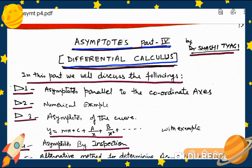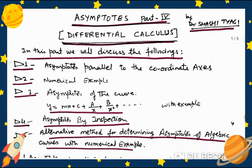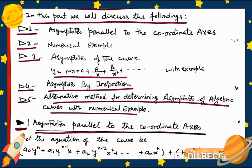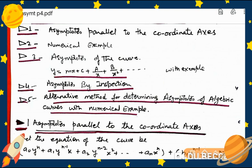In today's part we will discuss: asymptotes parallel to the coordinate axis with numerical examples; asymptotes of the curve of the type y = mx + c + a/x + b/x² with numerical examples; and asymptotes by inspection and alternative method for determining asymptotes of algebraic curves with numerical examples.